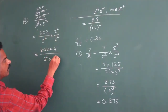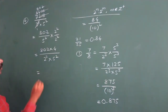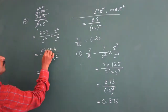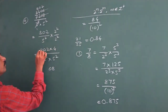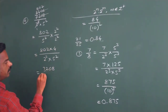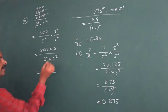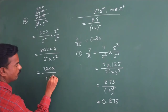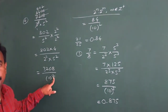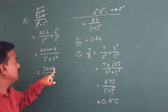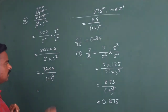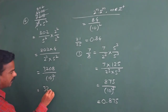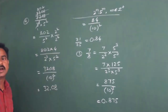We write 2 to the power of 2 into 5 to the power of 2 as 10 to the power of 2. The power is 2, so the decimal point is placed before 2 digits. 802 times 4 equals 3208, divided by 10 to the power of 2, giving us 32.08 as the answer.